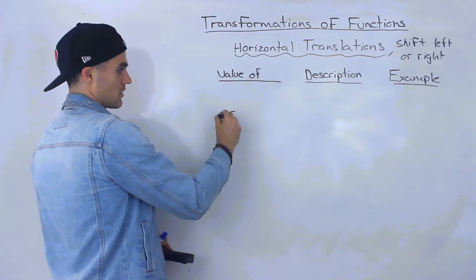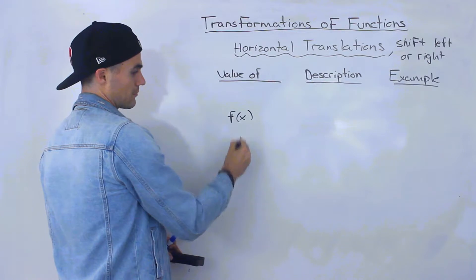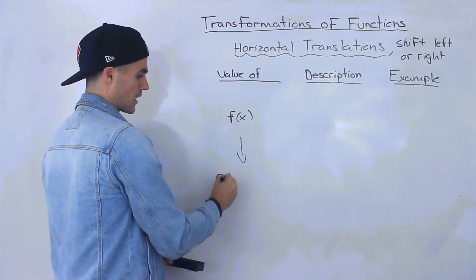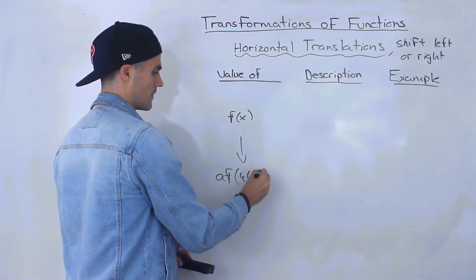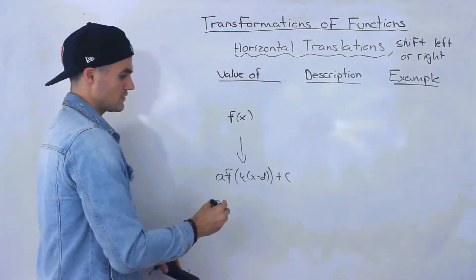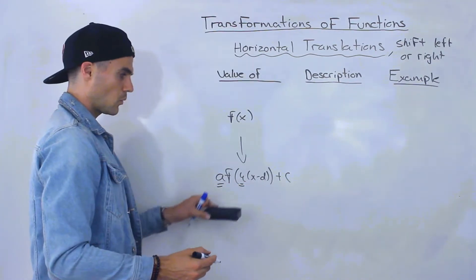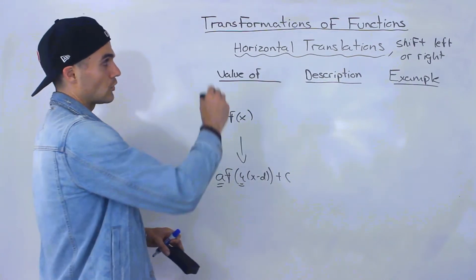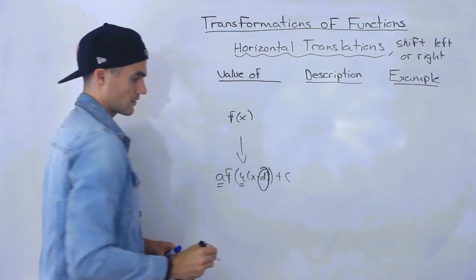As we mentioned in previous videos, what we're going to do is take a parent function and transform it in this format here. In previous videos we've already talked about the a and the k value and what kind of transformations those describe. Well, horizontal translations are described by the d value.